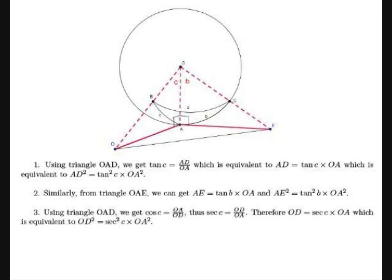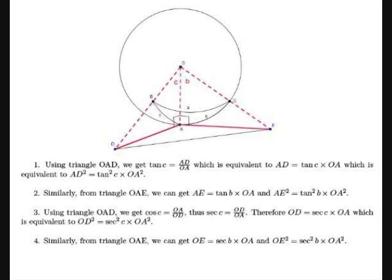Third, using triangle OAD: cos C equals OA over OD, thus sec C equals OD over OA, so OD equals sec C times OA, and OD squared equals sec² C times OA squared. Fourth, similarly from triangle OAE: OE equals sec B times OA, and OE squared equals sec² B times OA squared.